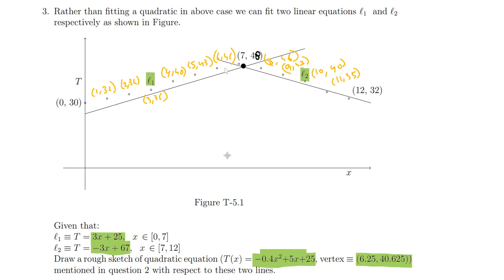The vertex will be somewhere here and it is at 40.625. So if this is the horizontal for 40, then the vertex is somewhere here.